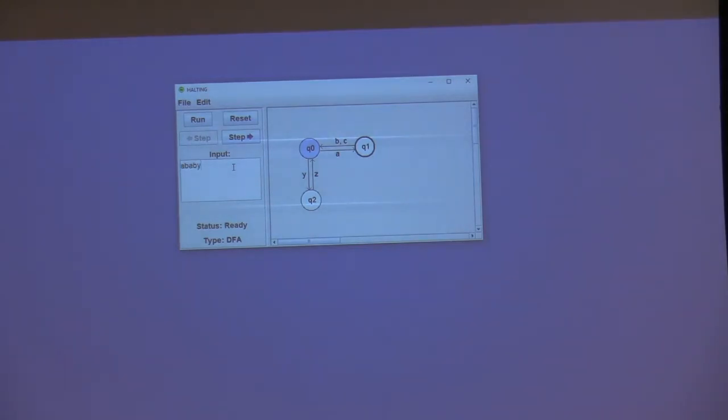So I'm going to show you how to step through input. I'm going to do ABABY. So if I hit this step forward button, you can see down here we just read an A. It tells you which character was just consumed. And then q1 is now selected because we've transitioned to that state. So as I keep selecting step, we continue consuming input and watching the machine transition. And finally we read the Y, which is the last character. And so we've ended up in q2 and that's not an accept state. So the string has been rejected.